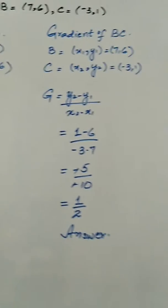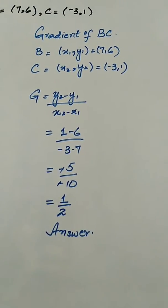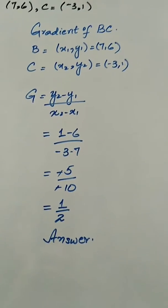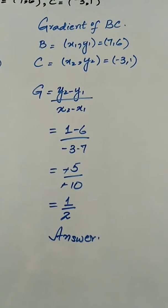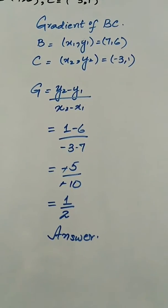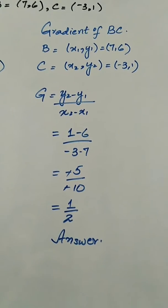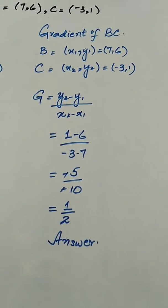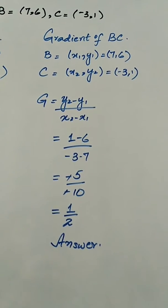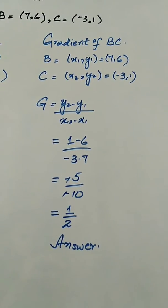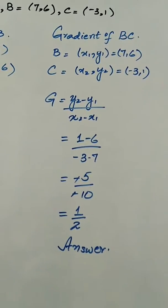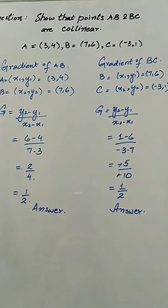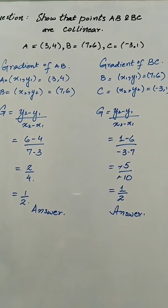Similarly, we will find out the gradient of points B and C. The gradient is (y2 - y1) / (x2 - x1), where x1, y1 is B = (7, 6) and x2, y2 is C = (-3, 1). Putting these values in the formula, we have (1 - 6) / (-3 - 7), which gives -5 / -10. The minuses cancel and 5 cancels with 10, giving the answer as 1/2. As you can see, the gradient of both AB and BC is the same, so these points are collinear.